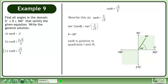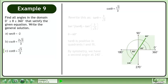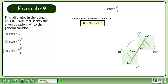Tan θ is positive in quadrants 1 and 3. By symmetry, we have a second angle at 240 degrees. The solution over the domain where θ is between 0 degrees and 360 degrees is 60 degrees and 240 degrees. The general solution is θ equals 60 degrees plus n times 180 degrees, where n belongs to the set of integers.